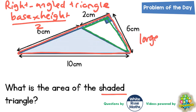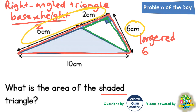So let's work that out. For the large red triangle, the base is six, and the height is going to be this distance which is six plus two, so that's eight. So it's six times eight, and then we need to halve that — divided by two.